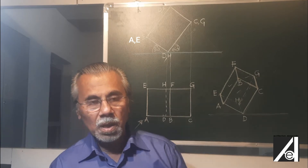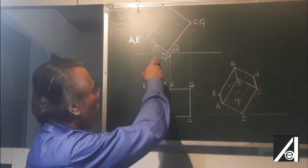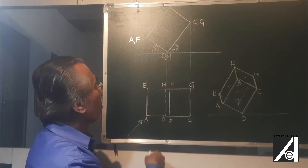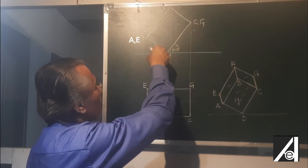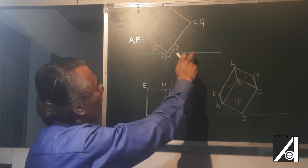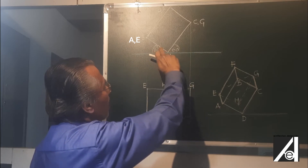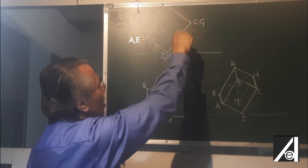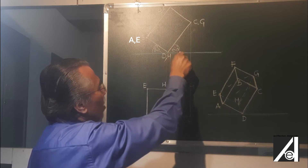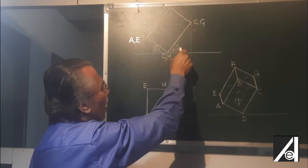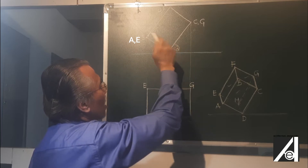So let us take an example of the cuboid again. This cuboid is placed with a base tilting at 30 degrees angle to the horizontal plane. And obviously, as it has surfaces which are perfect rectangles, the angle on the other side is going to be 60 degrees. So this is 30 and 60, this being 90.